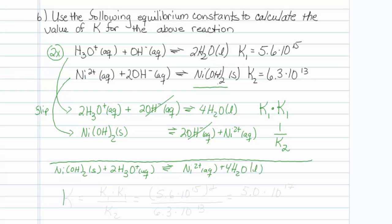So the equilibrium constant for this is going to equal K1 times K1 over K2. So that will be equal to 5.6 times 10 to the 15th, I will square that, and divided by 6.3 times 10 to the 13th. My calculator tells me that the answer is 5.0 times 10 to the 17th.